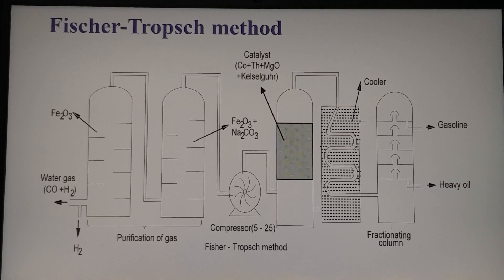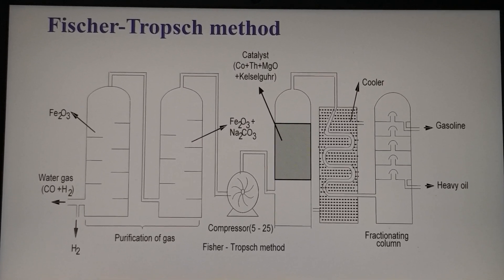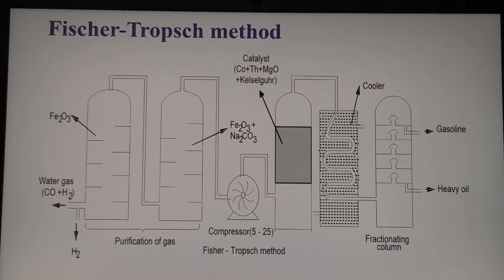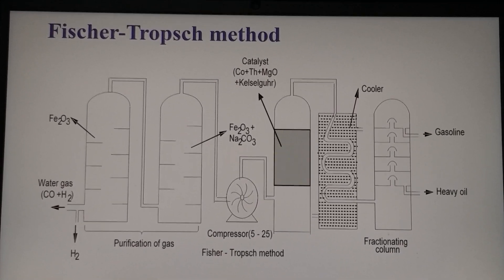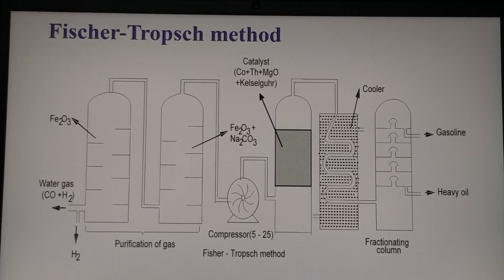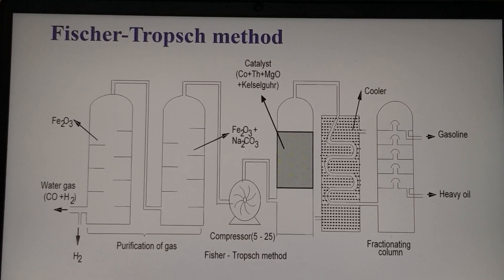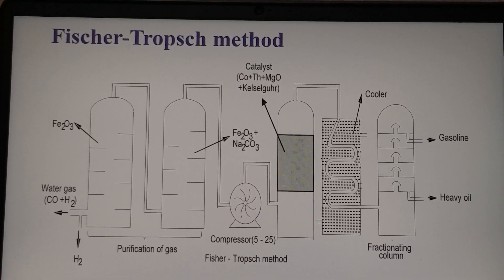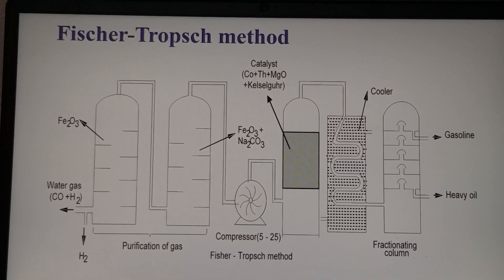The uncondensed hot gases are then led into the cooler. From the cooler, they are led to the fractionating column, which works on the principle of difference in boiling point. The heavier liquid settles down as heavy oil and is drained from the bottom, then subjected to cracking. The upper liquid, which resembles gasoline, is drained off — this is a very high quality petrol obtained using the Fischer-Tropsch method.